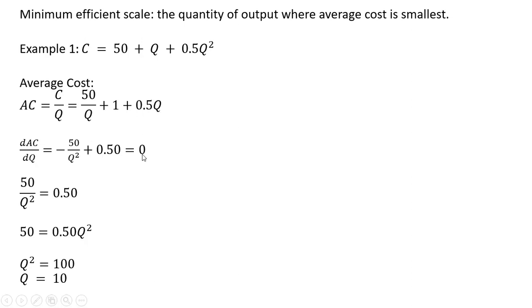So we set that derivative equal to 0 and solve for Q. So moving some things around, we get this result. I'm going to multiply everything through by Q squared. And then we're going to divide everything through by 0.5. So 50 divided by 0.5 is 100. So we have Q squared equals 100.